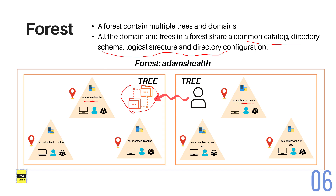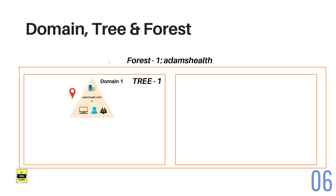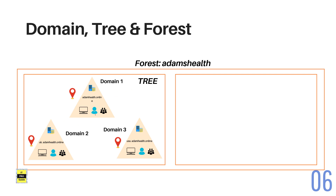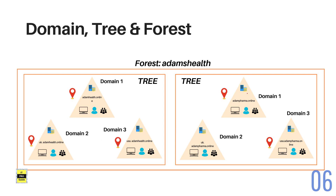Now that we have explained domain, tree, and forest, you might think you create a domain first, then a tree, then a forest. That is not how it works. The moment you create your first domain controller, it creates a forest and a tree. Once you add a child domain or subdomain, the tree expands. And when you add a different domain controller to the same forest, the forest expands. So the moment you create a domain controller, you create both a forest and a tree.